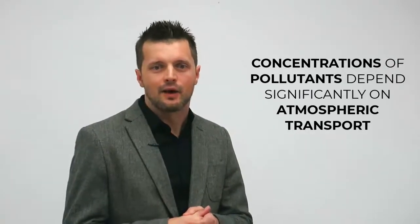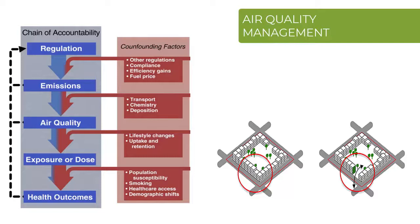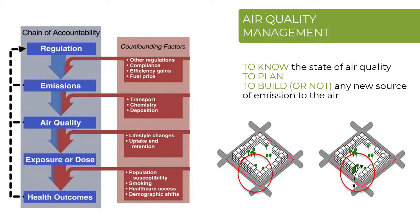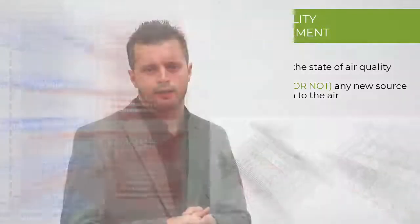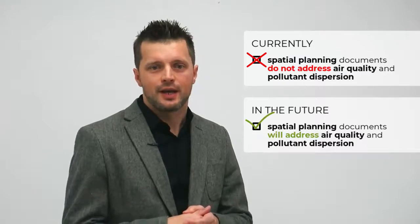In addition to the characteristics of the pollution resources, the concentration of pollutants depends significantly on atmospheric transport. The wind direction and speed and the state of atmospheric stability define pollutant dispersion over the area. When air quality is overloaded with multiple pollution sources, it is important to model the pollution dispersion. In that case, not even the smallest additional sources in the physical space can be built and commissioned. The practice in Bosnia and Herzegovina is opposite; spatial planning documents rarely take air quality and pollutant dispersion into account.